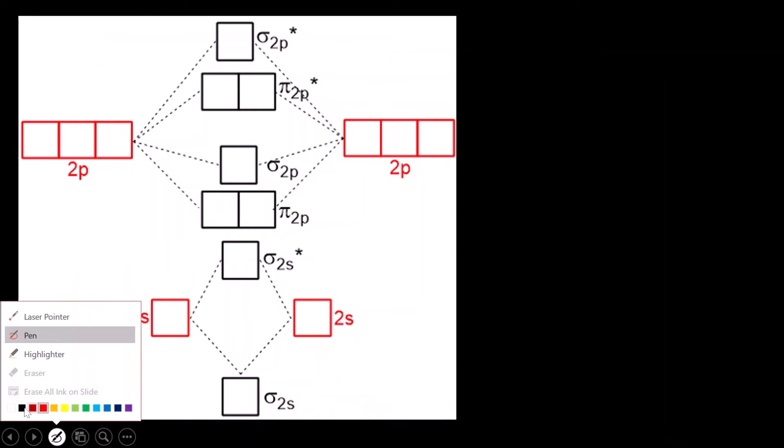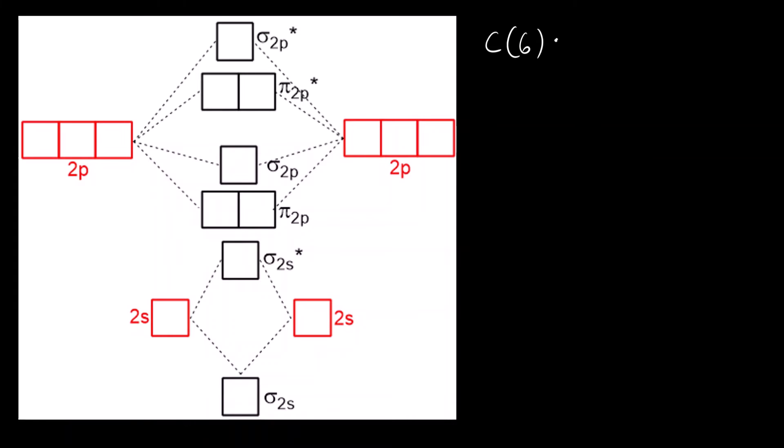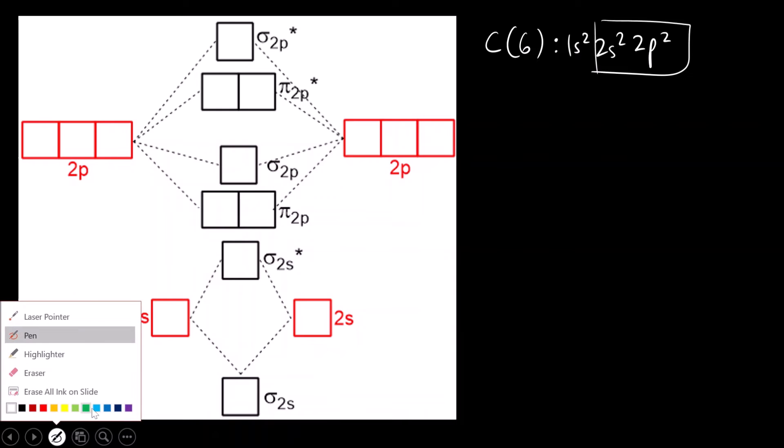Now we draw the diagram for C2. Carbon has atomic number 6, with electronic configuration 1s² 2s² 2p². For one carbon there are four electrons, and for another carbon, four more - so total eight electrons to fill. Each carbon contributes two electrons from 2s and two from 2p.